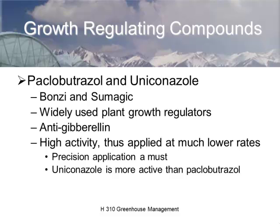Paclobutrazole and uniconazole are actually isomers of one another. When Syngenta patented paclobutrazole, they ignored the sister isomer and didn't patent it; it was picked up by a different company and now they compete. These are very widely used anti-gibberellins with very high activity — whereas we apply daminozide at 2,000 to 3,000 parts per million, we apply these at 20 to 30 parts per million. Precision is a must, because if you over-apply these chemicals, it gets really bad.